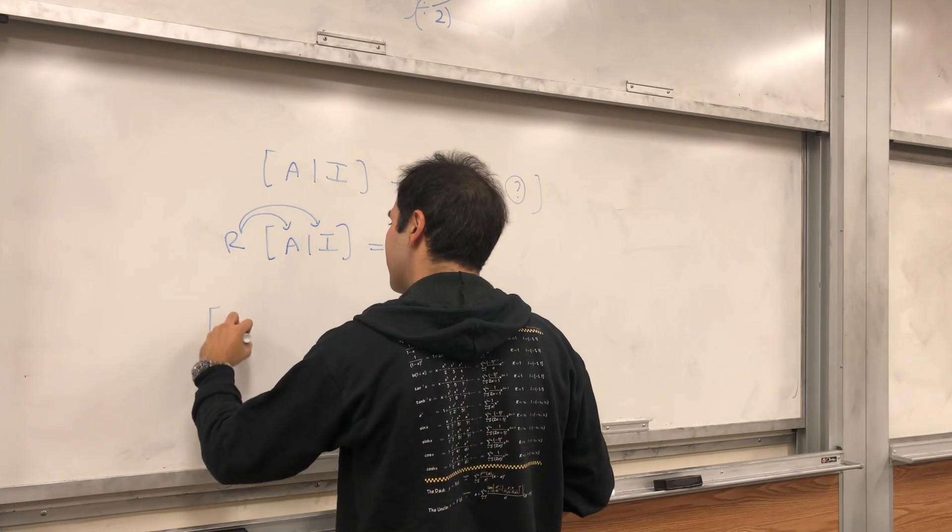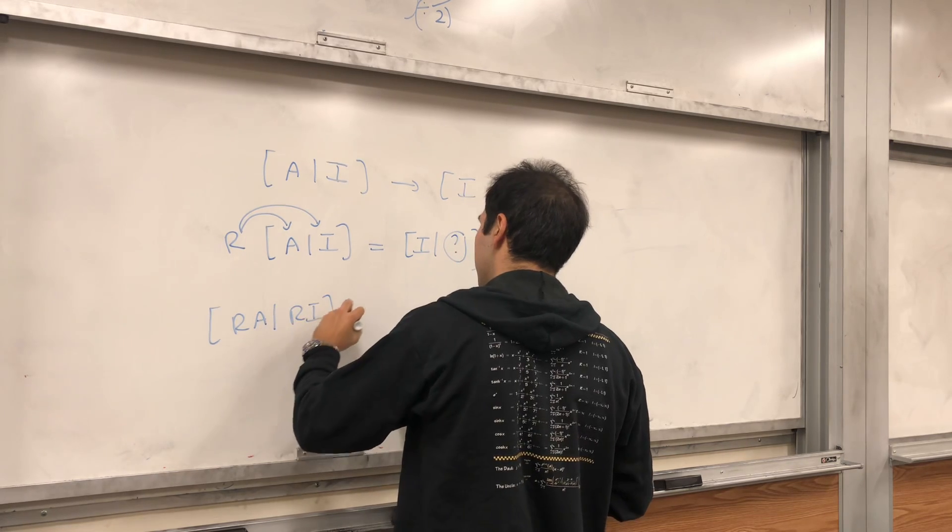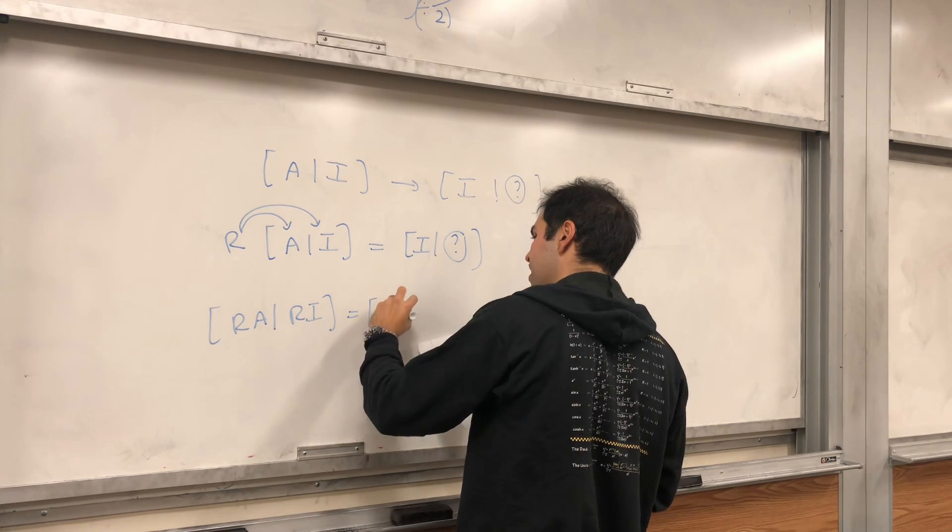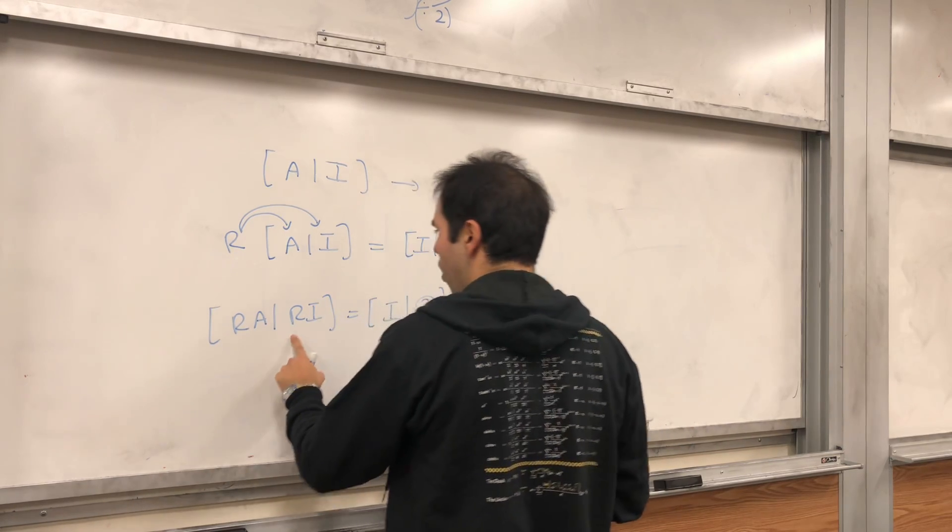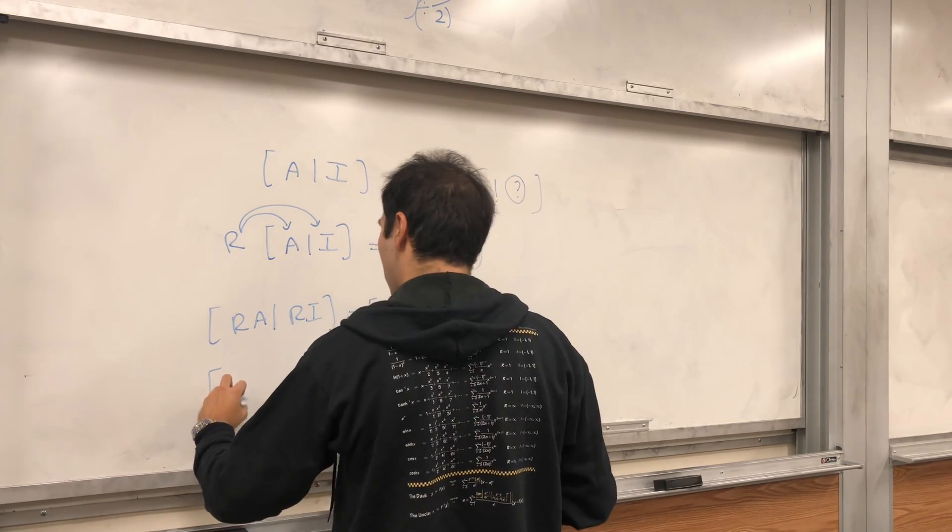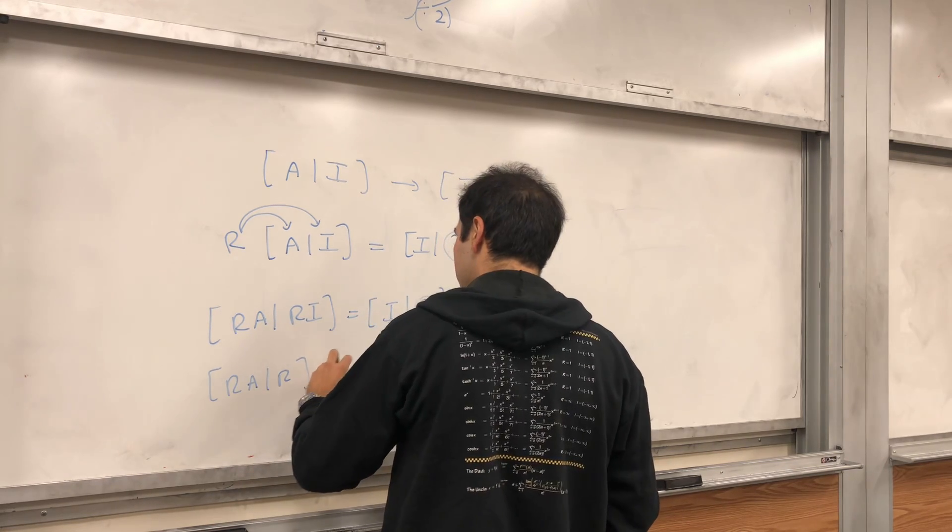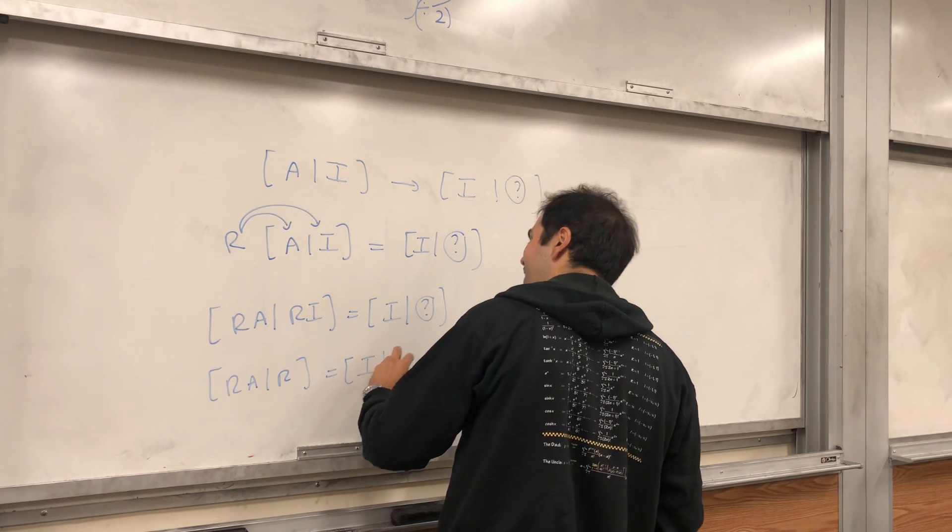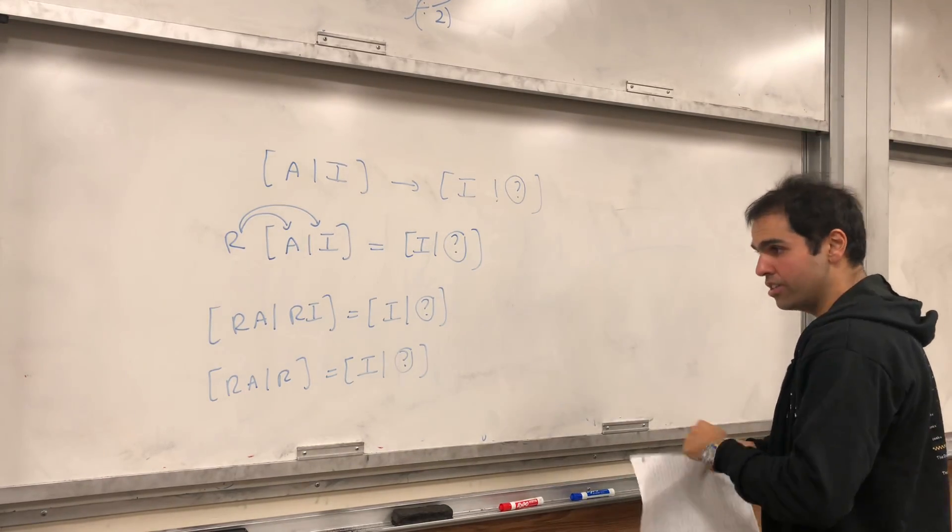So, it turns out this is the same as R A and then R I equals to I and something else. And R I, let's just R, so R A, R I, so R A R is R of I and something else. And it turns out this is interesting.